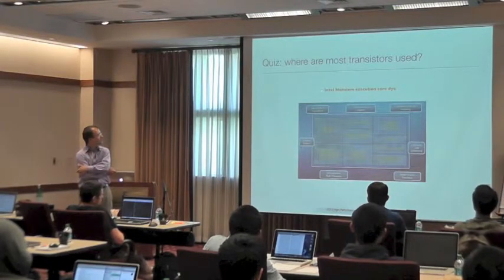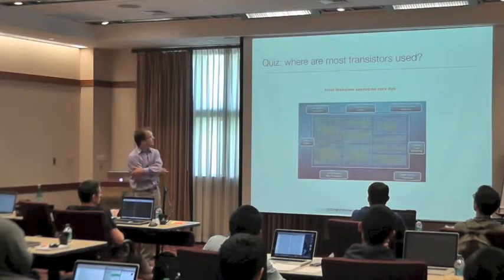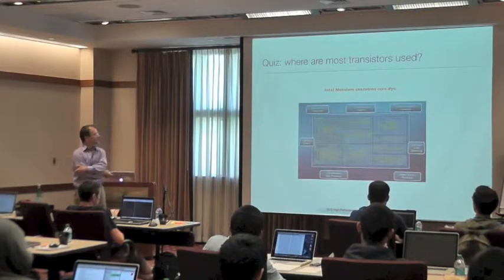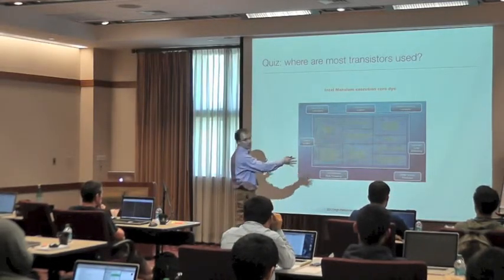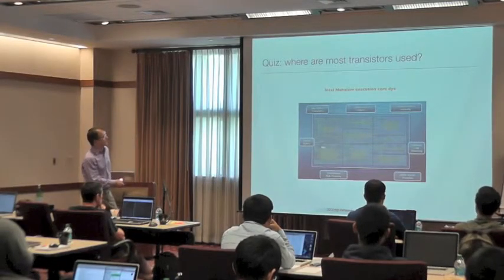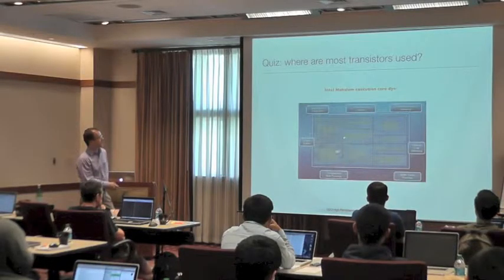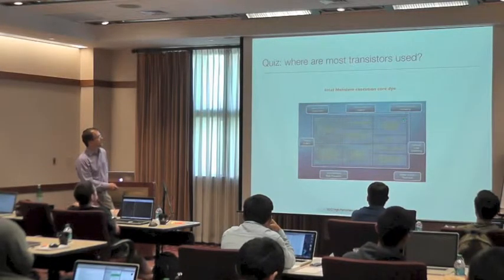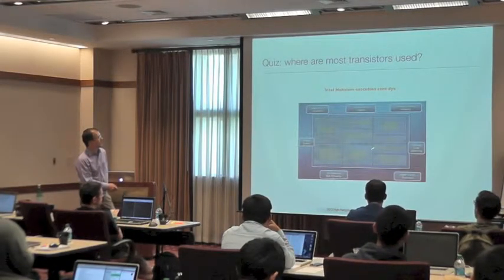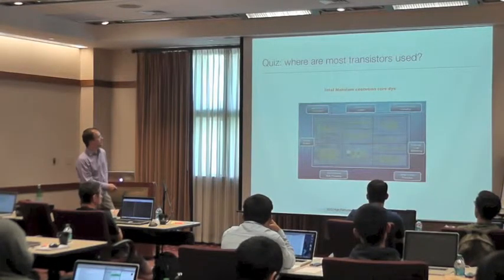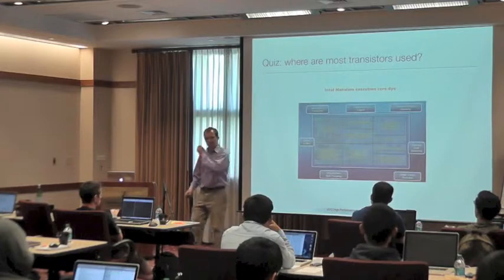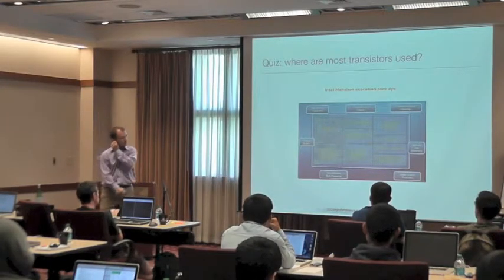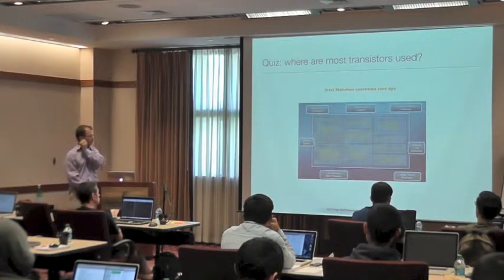This is the die of the Intel Nehalem architecture, which is the second most recent architecture at the time. This is just one core — on a single piece of silicon you have multiple units of this with some additional silicon connecting them. Execution units only take about 20% of this. You have L1 data cache, L1 instruction cache, L2 cache, interrupt servicing, branch prediction, memory ordering and execution, and instruction decode. All of these things take lots of transistors — most transistors go into not executing instructions, but making sure they can be executed well.